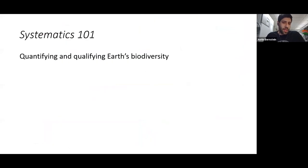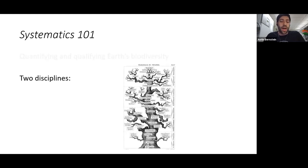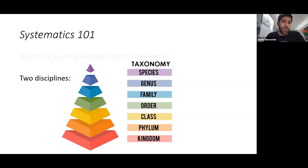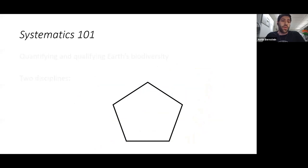I've mentioned systematics a few times, and I'm defining it as quantifying and qualifying Earth's biodiversity. I say quantifying because we use statistical means and computer algorithms to look at evolutionary processes, and qualify because we also need to be somewhat subjective based on our own knowledge, expertise, and prior research. This involves two major disciplines: taxonomy — the hierarchical classification of organisms into species, genera, family, and so on — and phylogeny, which looks at the evolutionary relationships of these organisms.